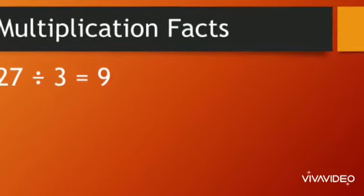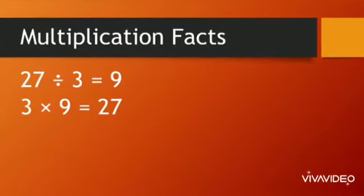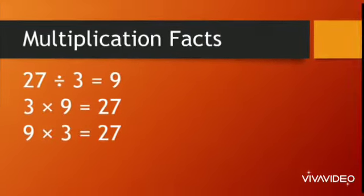So, 3 multiplied by 9, we get 27 and 9 multiplied by 3, we get 27 this time also.